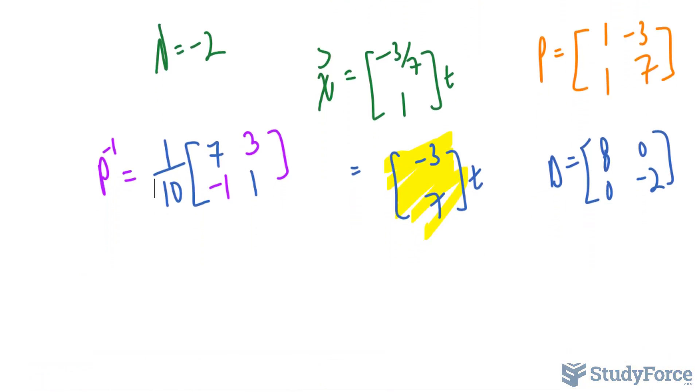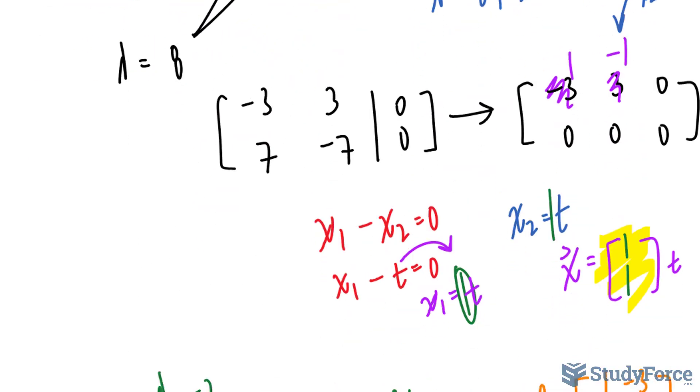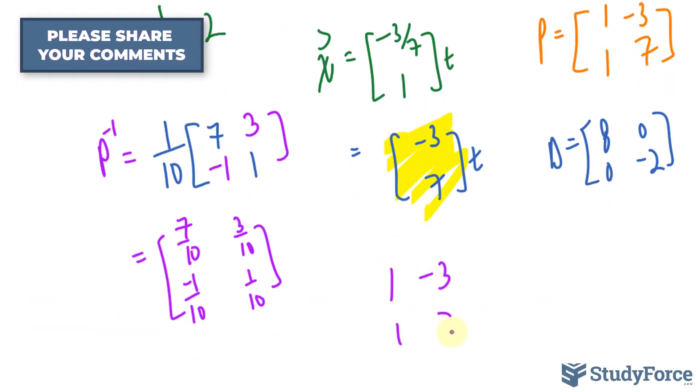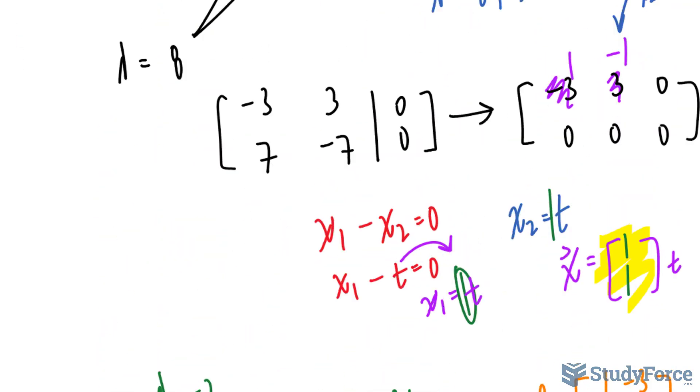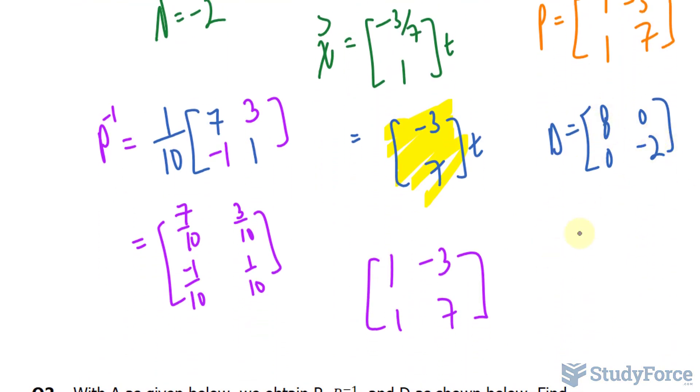And now, we multiply 1 tenth to each of these elements. 7 over 10, 3 over 10, negative 1 over 10, and 1 over 10. And using this formula, this one right here, I'll multiply P times D. So P, where was it? Over here. 1, negative 3, 1, and 7. Times D, raised to the power of 3. So I will raise this to the power of 3, and that to the power of 3. 8 to the power of 3 is 512. And negative 2 to the power of 3 is negative 8. And don't forget, this matrix has the inverse being multiplied at the very end. And that will give us the answer to A to the power of 3.